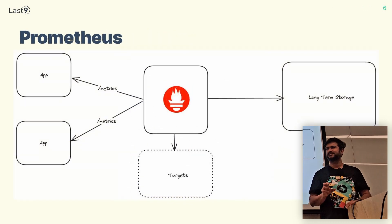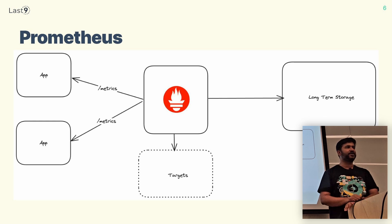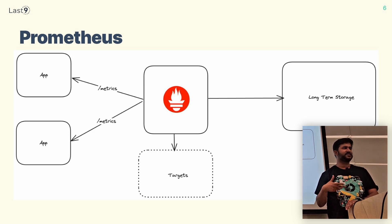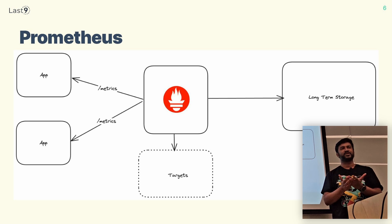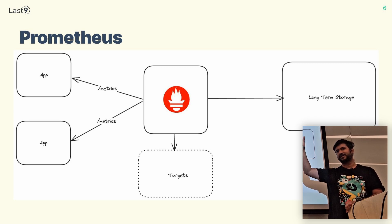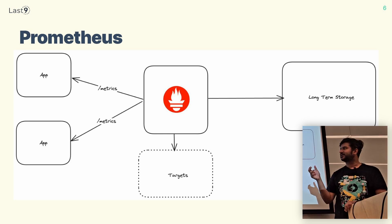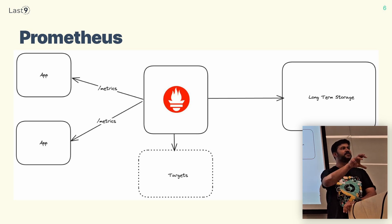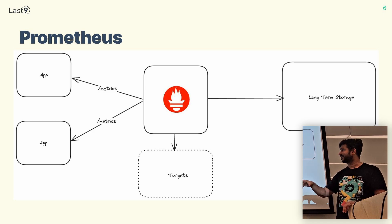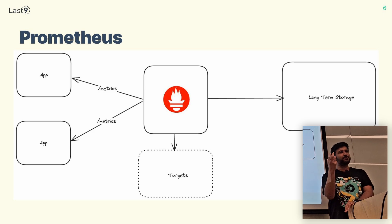Let's talk about Prometheus. I'll give a brief introduction to the Prometheus architecture and how it monitors applications. You have a Prometheus server in the middle; there are applications — HTTP applications, backend applications — that emit metrics. This is slightly different from New Relic or Datadog, where you have an agent that pushes telemetry data to a central storage. Here, applications emit metrics and a Prometheus server scrapes them from different components. Then it either keeps the data itself or pushes it to long-term storage. It's based on a pull-based model.